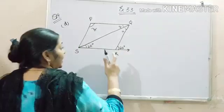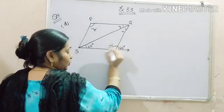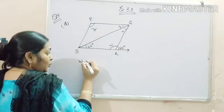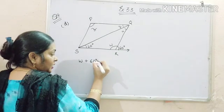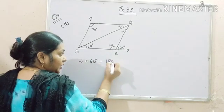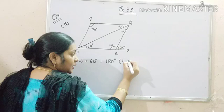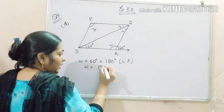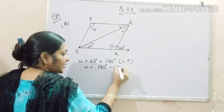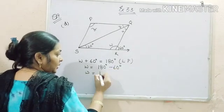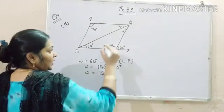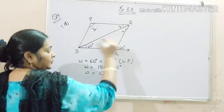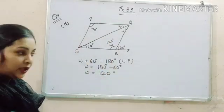Let me take this angle as W. Now W plus 60 degree is equal to 180 degree. Why? Linear pair. W will be equal to 180 degree minus 60 degree. That means it is 120 degree. This angle is 120 degree.